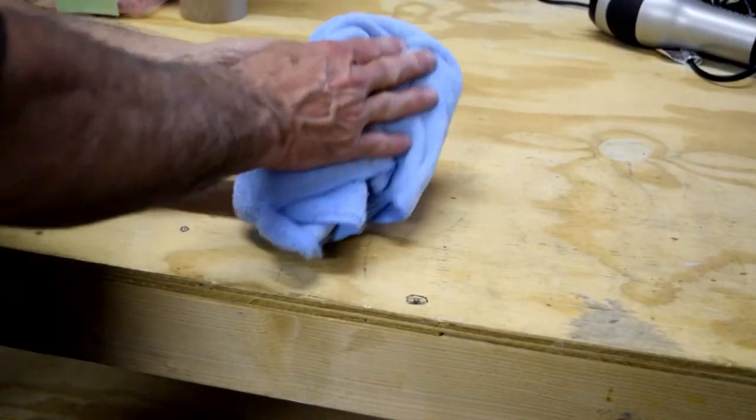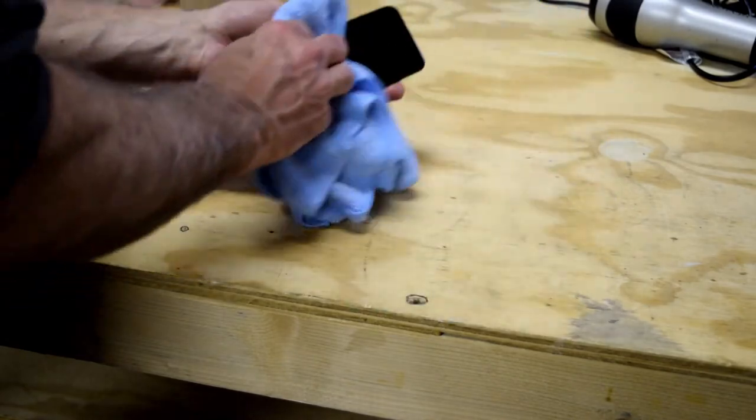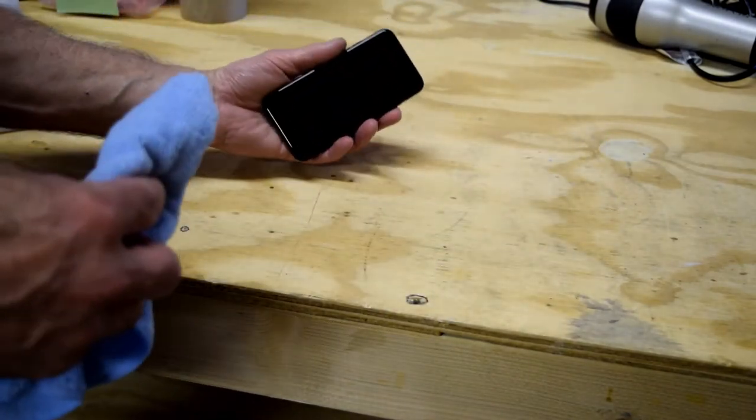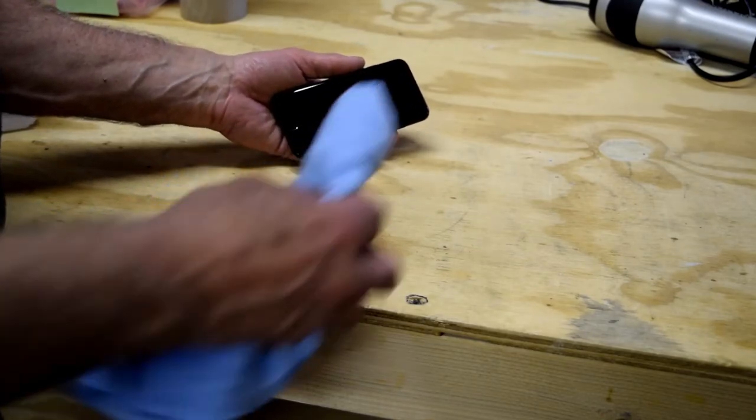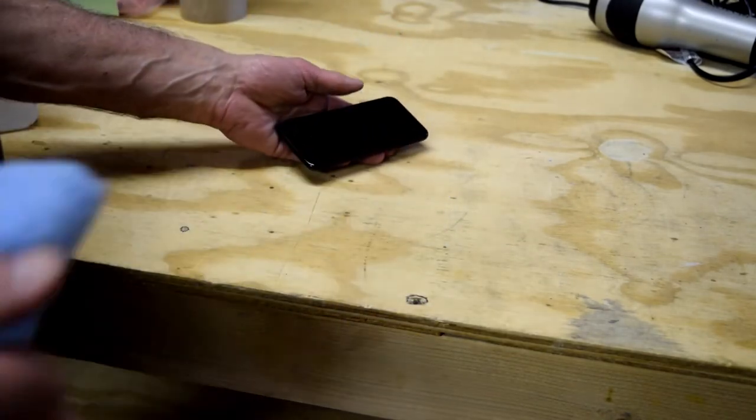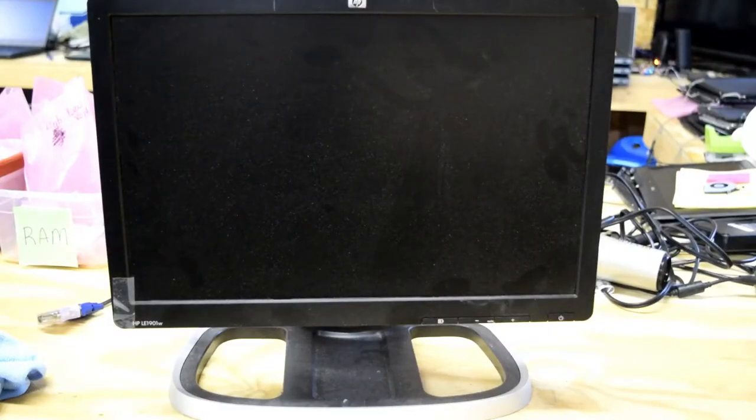You can use this same process with a towel, the microfiber towel, on your cell phone. Wipe it off. The screen will look new. You don't even need any water. Just wipe it with a towel. These things are designed with cleanliness in mind.